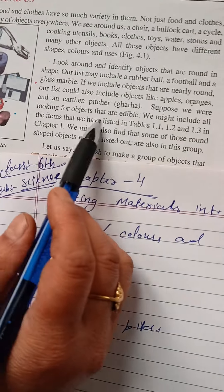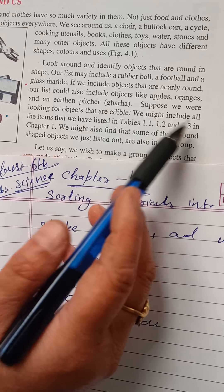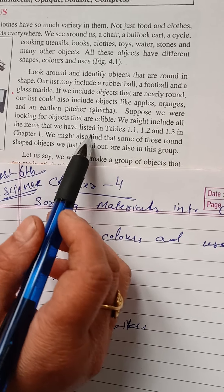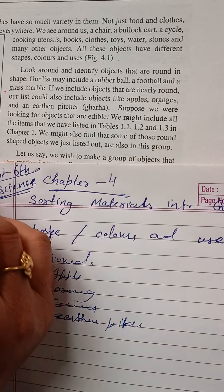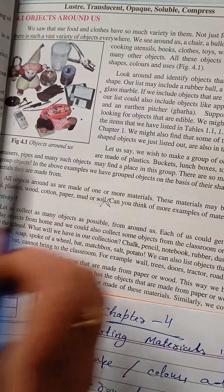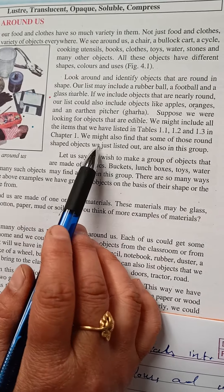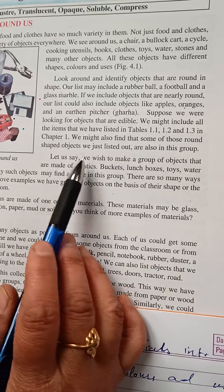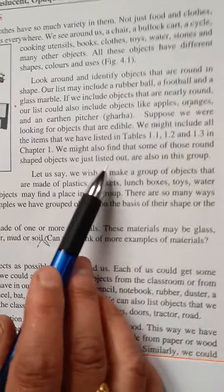Suppose we were looking for objects that are edible. We might include items that we have listed in table 1.1. We might also find that some of those round shaped objects we just listed are also in this group.